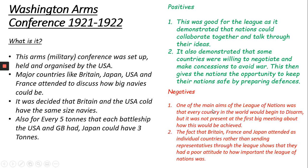However, the negatives: one of the main aims of the League was to disarm — you were supposed to be getting rid of your militaries. However, this is a clear violation because navies are being built up and made bigger. And the fact that Britain, France, and Japan attended as individual countries rather than sending representatives from the League shows how poor their attitude was to the League of Nations — it's a massive sign of disrespect that they went as their individual countries and not as a group from the League of Nations.